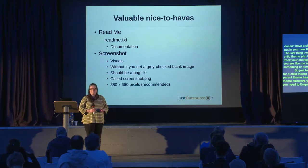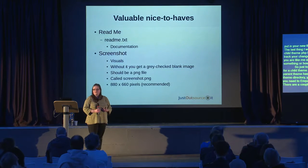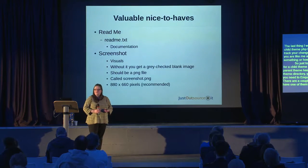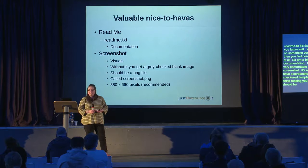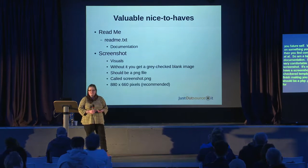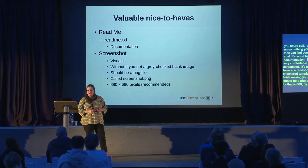There are a couple of things that are really nice to have. One is a readme file — just make a simple text file called readme.txt. That's your documentation and it's a love letter to your future self. When you spend a lot of time working on something you think you'll remember it forever, but two weeks later you don't. The other nice-to-have is a screenshot. If you don't have one you'll get a very blank checkered template. It should be a .png file called screenshot.png, with a recommended size of 880 by 660 pixels, saved in your child theme directory.